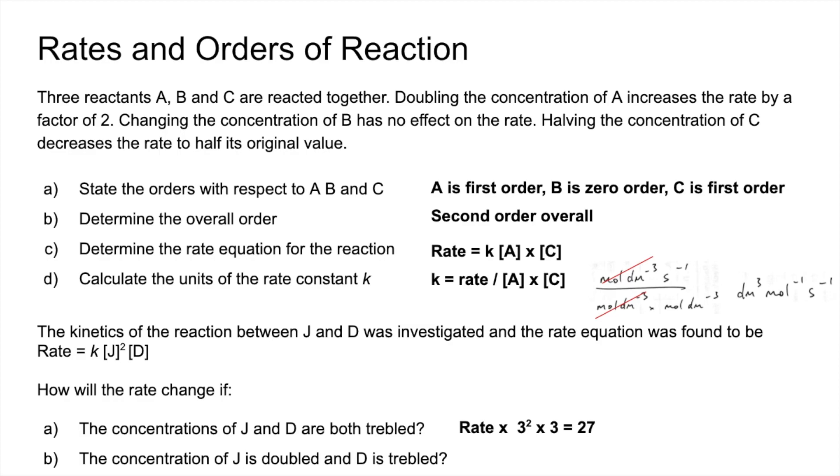And if J is doubled, D is trebled, so it would be 2 to the power of 2 times 3. And that gives you a 12-fold increase.